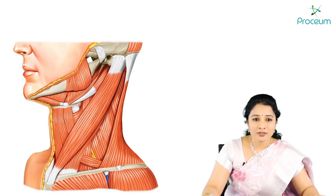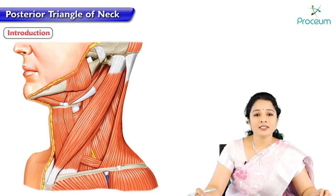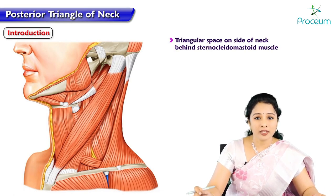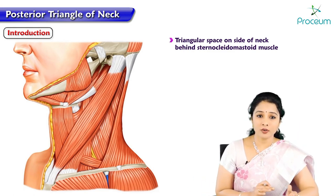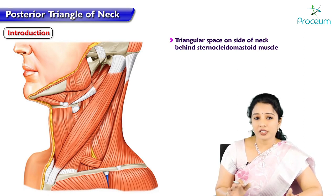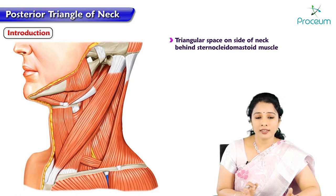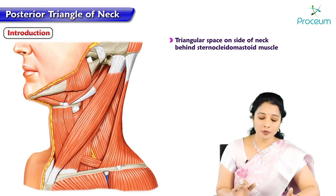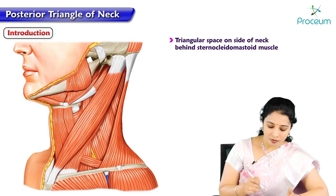Today's topic is the posterior triangle of the neck. It is a triangular space on the side of the neck, behind the sternocleidomastoid muscle. Here is the side of the neck where all superficial structures are removed — skin, superficial fascia and its contents, and deep fascia — to show the muscles forming the boundaries of the posterior triangle.